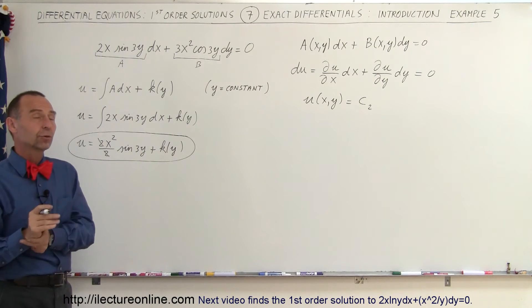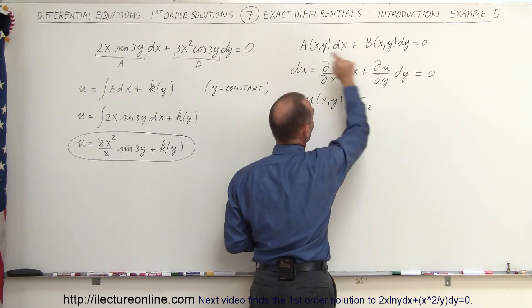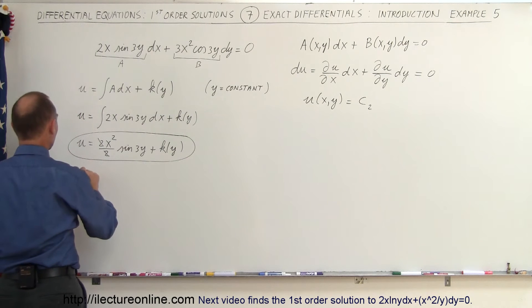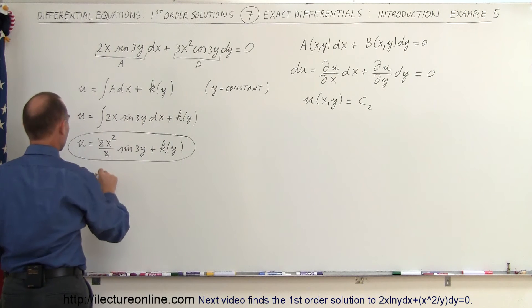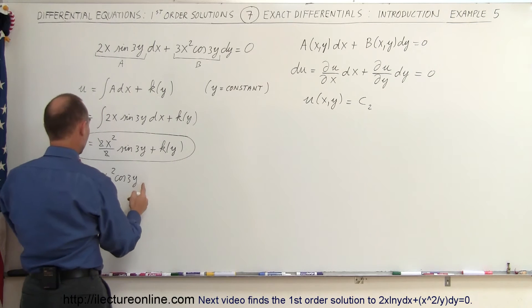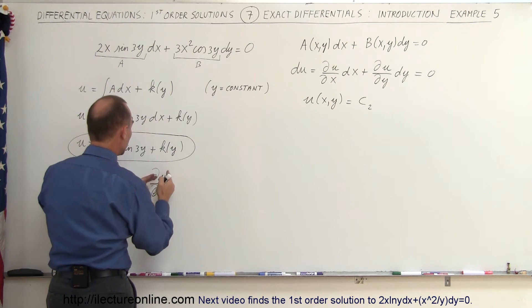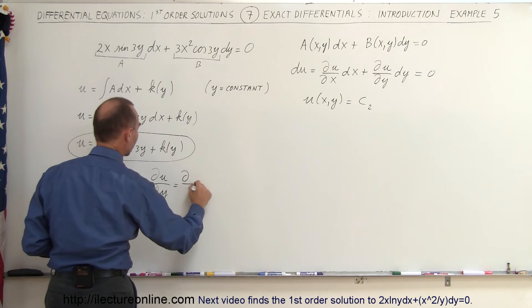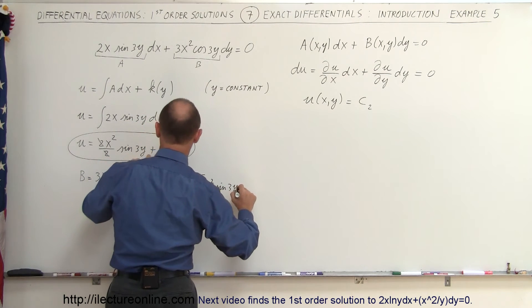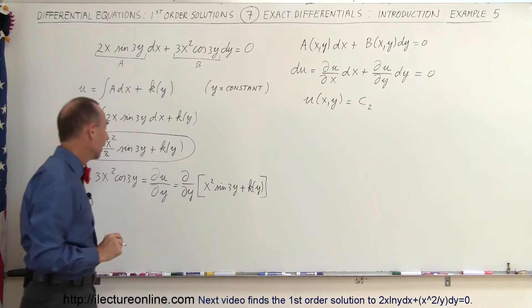We still need to find k(y). We know that the partial derivative of u with respect to y equals b, and b equals 3x squared times the cosine of 3y. So we set up: since b equals that quantity and b also equals the partial of u with respect to y, we write the partial of u — which is x squared times the sine of 3y plus k(y) — with respect to y.